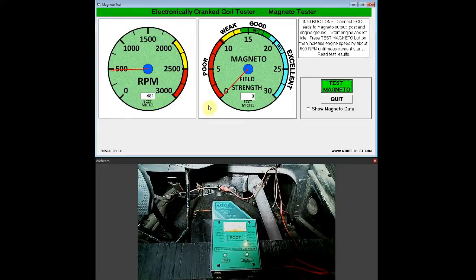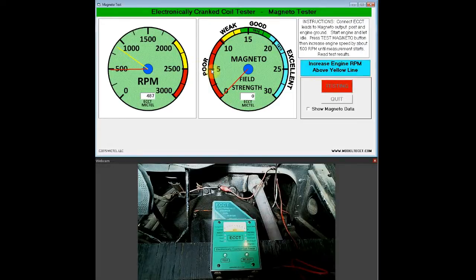To test the Magneto, it's very simple. Just press the test Magneto button and follow the instructions. Here it says to increase the engine RPM above the yellow line on the tachometer. We'll do that now.